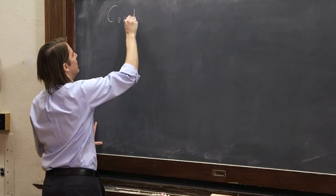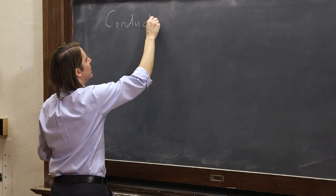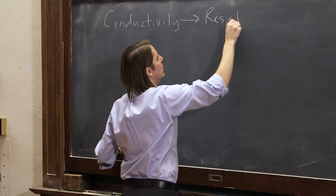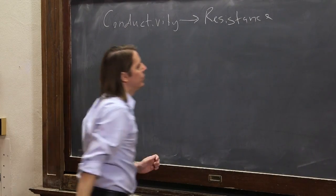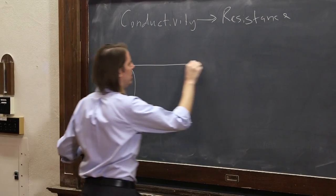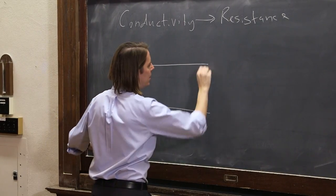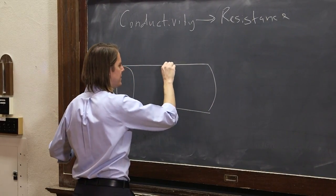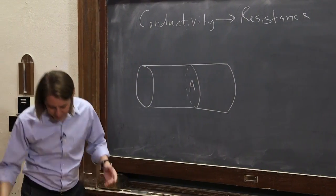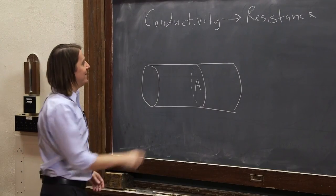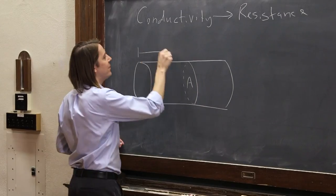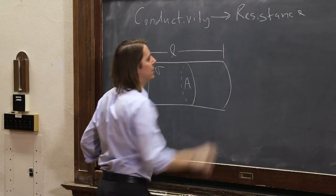So let's see if we can get from the conductivity to the resistance. Let's draw it out here. I'm going to draw a nice big wire like that. It has some cross-sectional area A. The material has a conductivity sigma, and it has some length L like that.